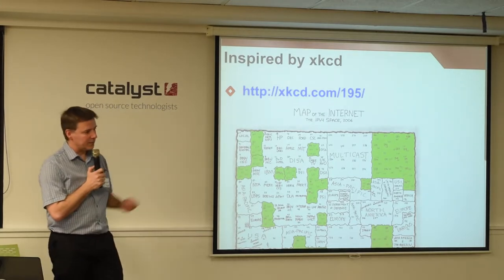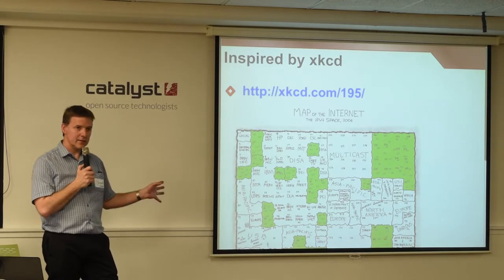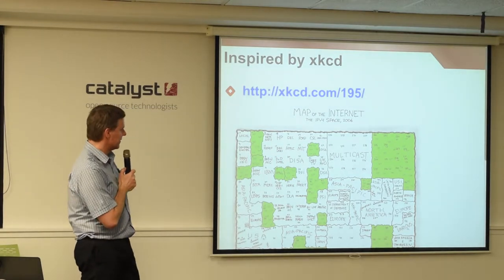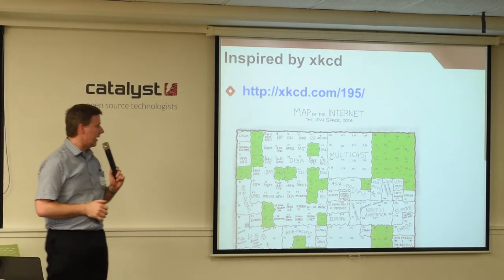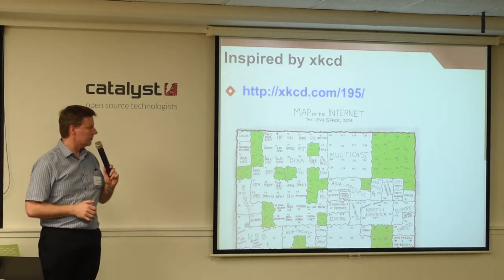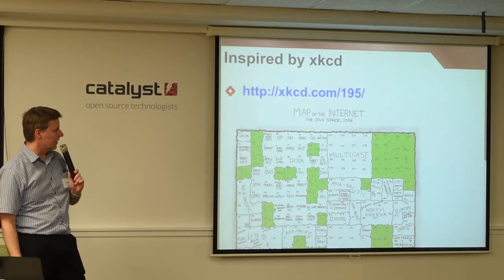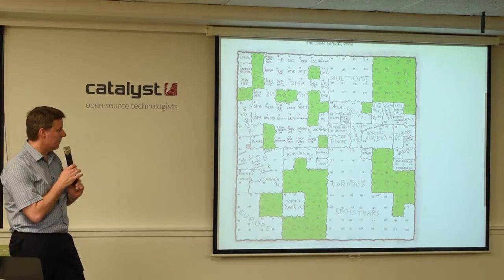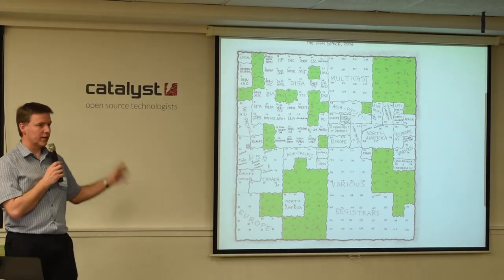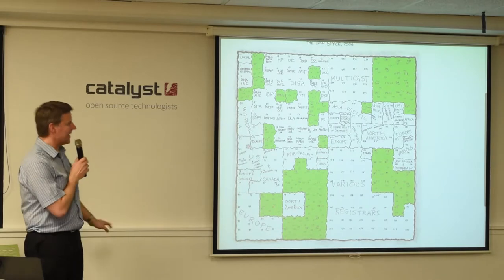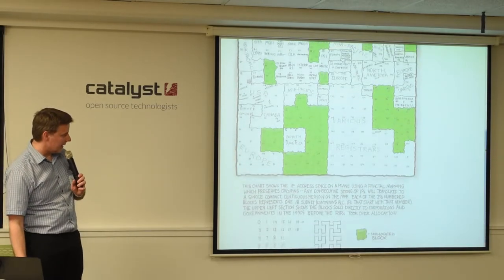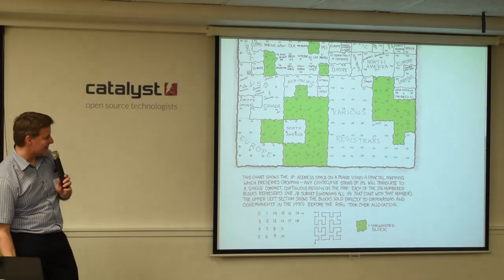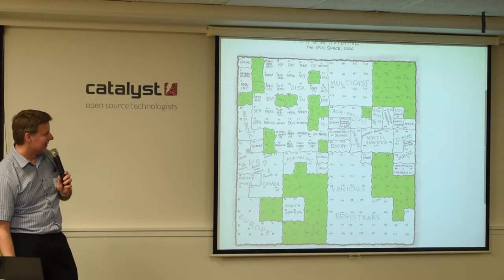Having built a number of interfaces to different types of data, often you want a search for when you know what you're looking for and a browse for when you don't. This talk is about browsing, and about one particular type of data visualisation. This was a map that Randall Munroe, who does the XKCD website, created in 2006 — a map of the internet where he took the IPv4 address space and laid it out. The green bits of unallocated space? There hasn't been any of that for some time now. We ran out, because you squandered them.